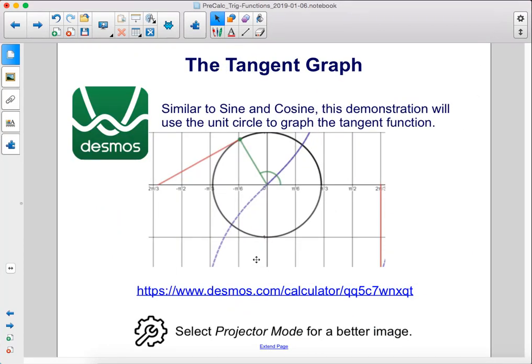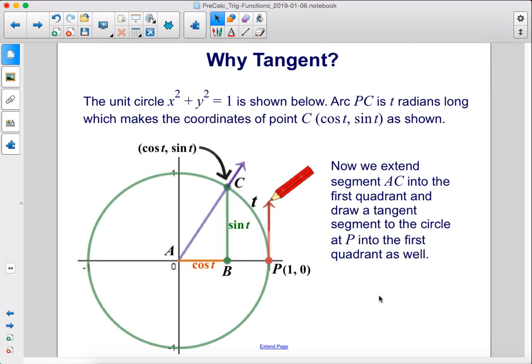Similar to sine and cosine, this demonstration will use the unit circle to graph the tangent function. The unit circle x² + y² = 1 is shown below. Arc PC is t radians long, which makes the coordinates of point C (cos t, sin t) as shown.